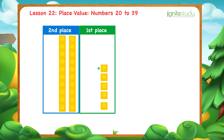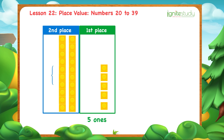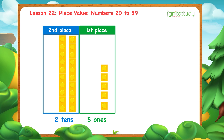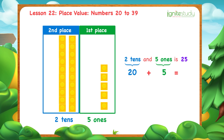Each block represents a 1. So here, we have 5 ones. In the second place, we have 2 tens. As you can see, 2 tens and 5 ones is 25. You can see this as: 2 tens is 20, 5 ones is 5, so 20 and 5 is 25.